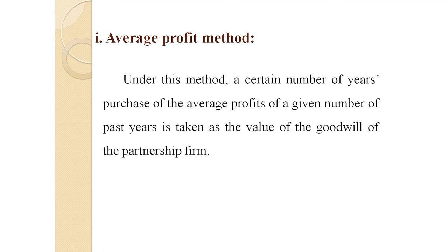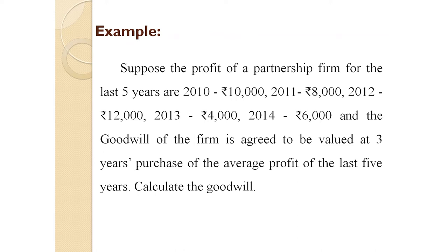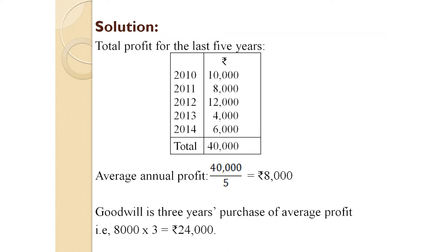The first method is the Average Profit Method. Under this method, a certain number of years' purchase of the average profit of a given number of past years is taken as the value of goodwill. For example, suppose the profits of a partnership firm for the last five years are: 2010 – ₹10,000; 2011 – ₹8,000; 2012 – ₹12,000; 2013 – ₹4,000; 2014 – ₹6,000. The goodwill is agreed to be valued at three years' purchase of the average profit of the last five years.